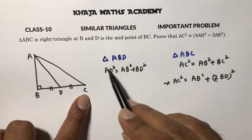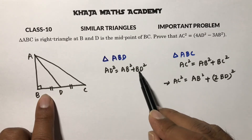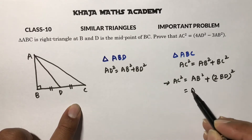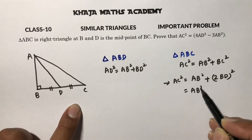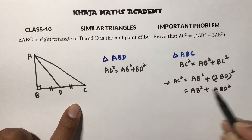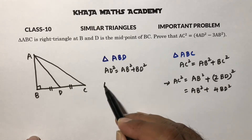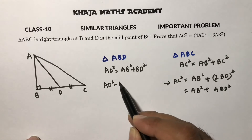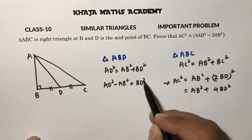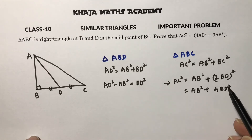Substituting BC = 2BD into the equation: AC² = AB² + (2BD)² = AB² + 4BD². Now I will substitute for BD².